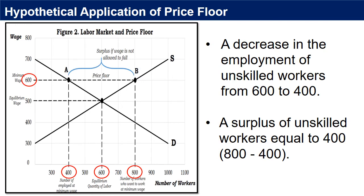The effects of the minimum wage on the market for unskilled workers are: 1. A decrease in employment of unskilled workers from 600 to 400, and 2. A surplus of unskilled workers equal to 400 (800 minus 400). With this, employers have more incentives to substitute machines and high-skilled workers for low-skilled workers.